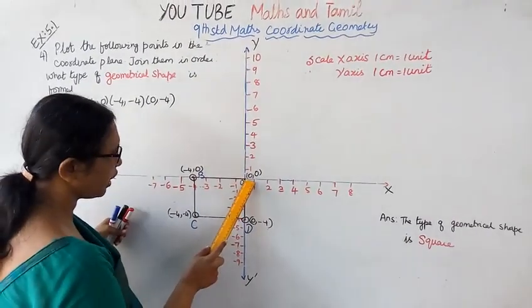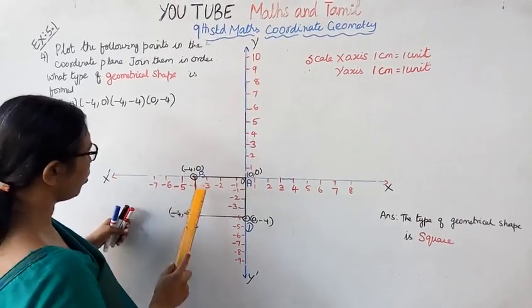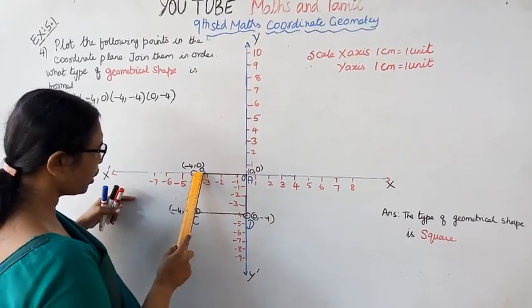(0,0) means this point. Then (-4,0). What do you plot? (-4,0).